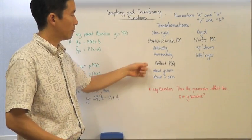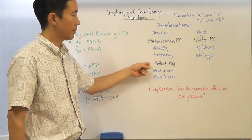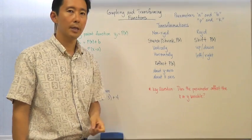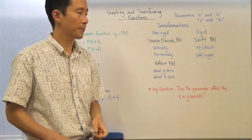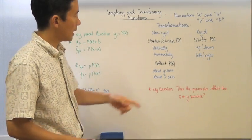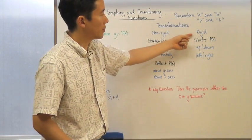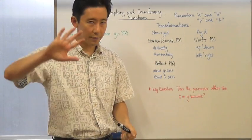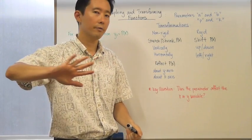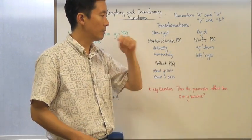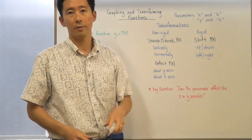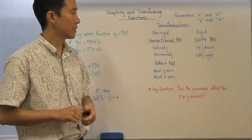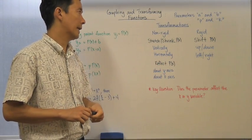Or, we can reflect the parent function about the y-axis or about the x-axis. And then we can have a rigid transformation where you're just going to be shifting the whole parent function either up or down, or left or right. Those are all the ones that we're going to take a look at.